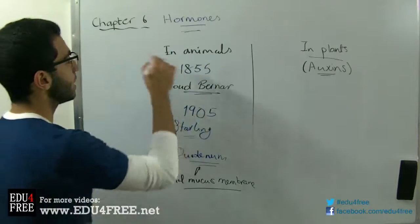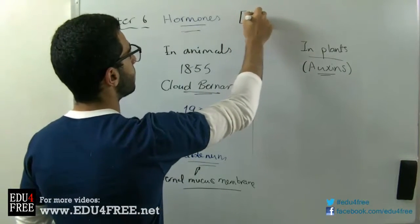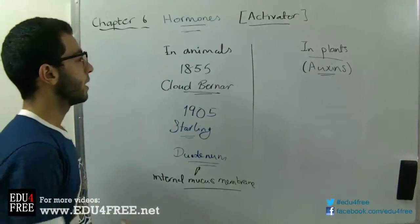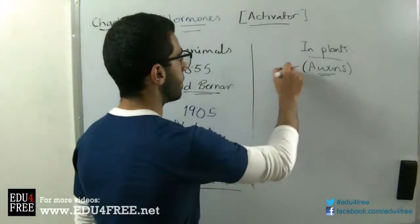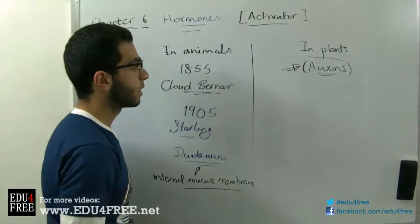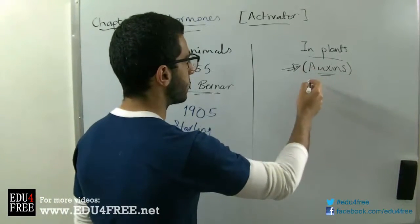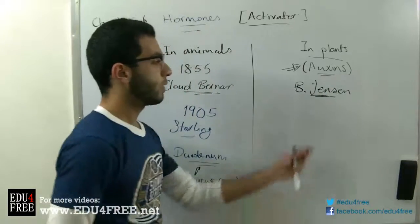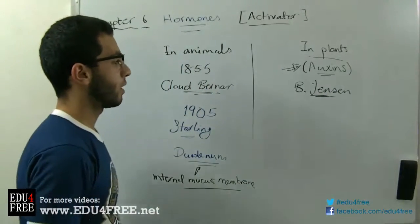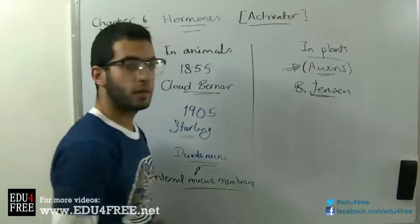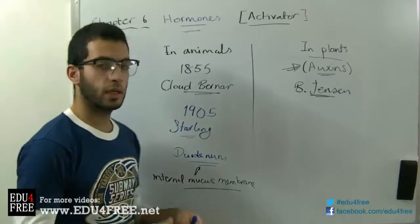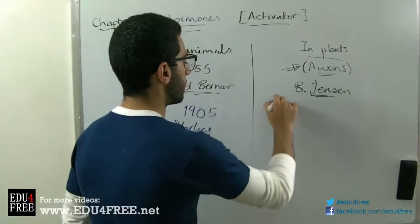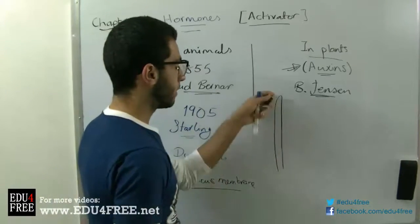The word hormone is originally a Greek word which means activator. That's it for hormones in animals. In plants, we said that they are called auxins. A very important scientist in this field is Jensen. He was working on discovering auxins and found that there was no special organ that produces auxins in plants. He found that they are produced by the tips of the plant.